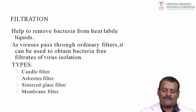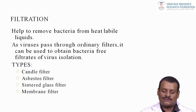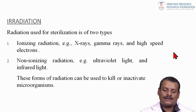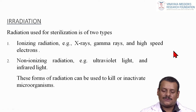Filtration helps to remove bacteria from heat-labile liquids. As viruses pass through ordinary filters, filtration can be used to obtain bacteria-free filtrates for virus isolation. The types of filters used are candle filter, asbestos filter, sintered glass filter, and membrane filter. Radiation used for sterilization is of two types: ionizing radiation and non-ionizing radiation. X-rays, gamma rays, and high-speed electrons are ionizing radiations; ultraviolet and infrared light are non-ionizing radiations.